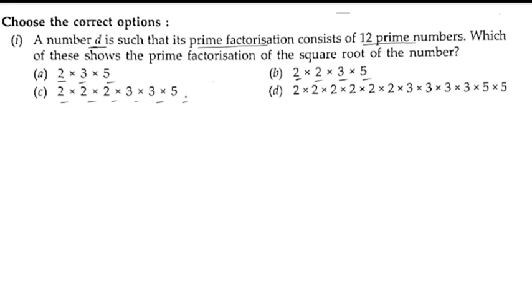But in option D, we have 1, 2, 3, 4, 5, 6, 7, 8, 9, 10, 11, 12 - we're having 12 prime numbers, and we can take out the square root with this. So option D is the correct one.